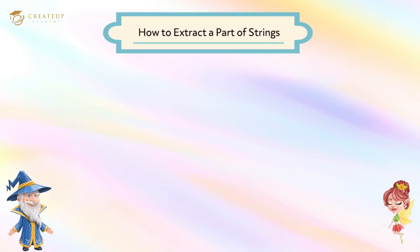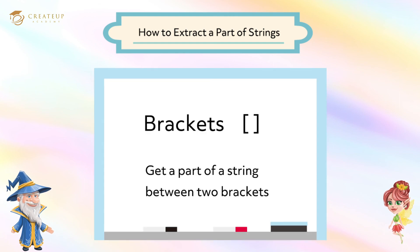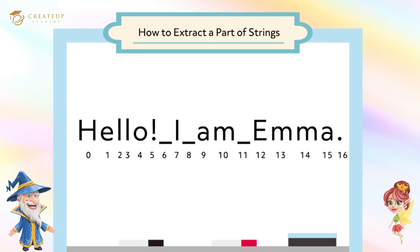How to Extract a Part of Strings. If you want to extract a character from a string, you can use brackets. You can extract a single character or a specified range of characters. The position is specified by a number starting from 0. For example, there are 17 characters in 'Hello, I am Emma', so you specify the characters from 0 to 16. When we count a character in the strings, we must count from 0.